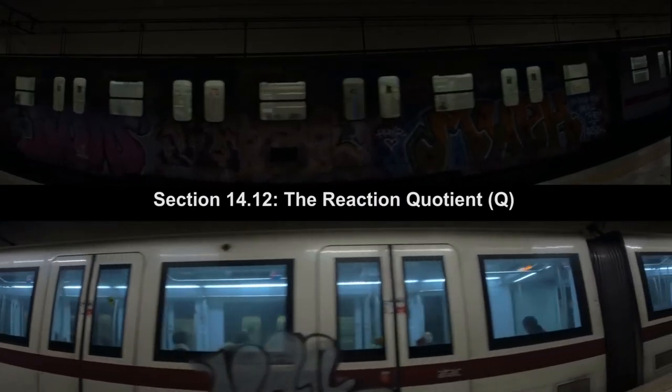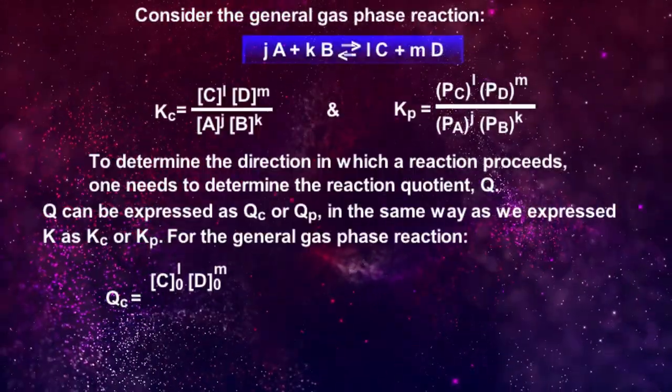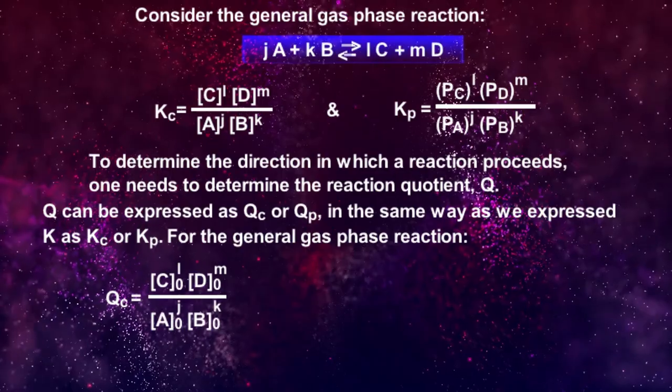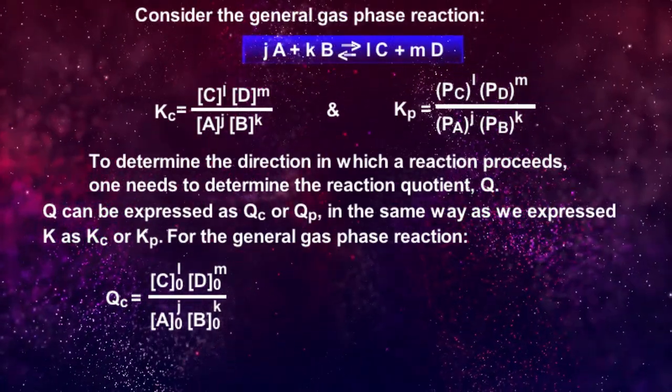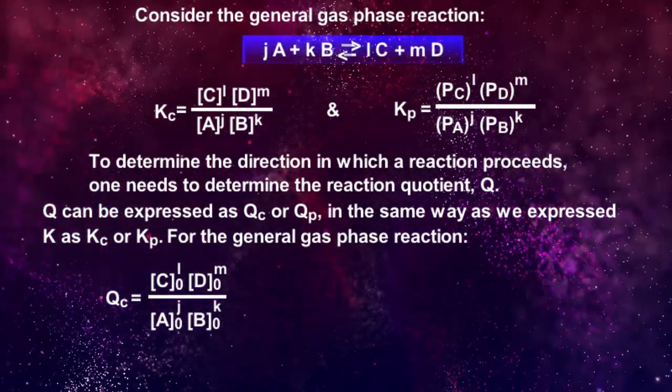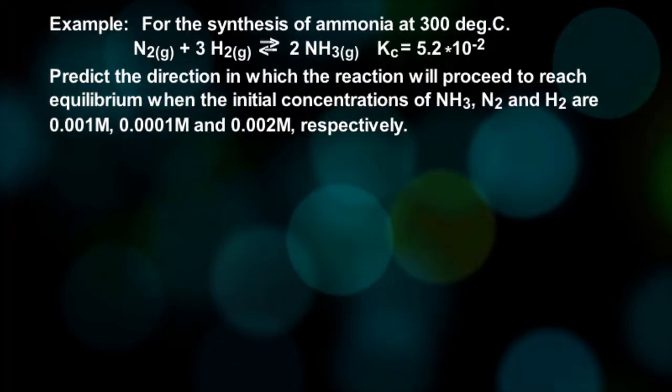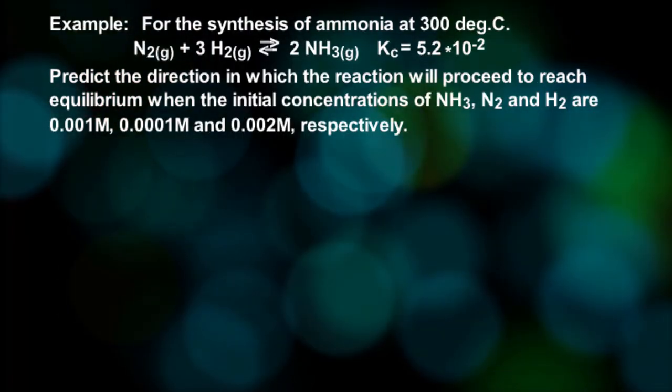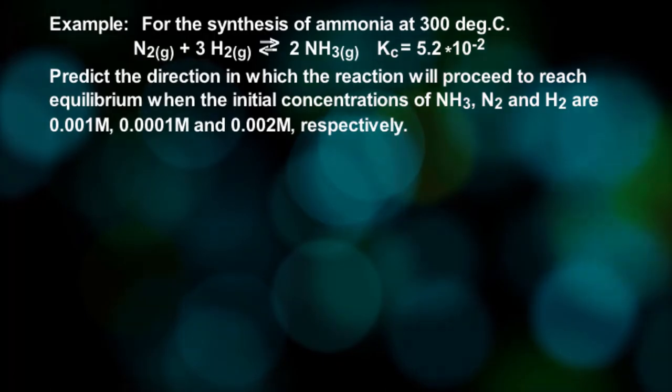In section 14.12, reaction quotient Q is introduced. One needs to compare the numerical value of Q to the equilibrium constant K to predict the shift in the direction of equilibrium. Hence, this topic involves both conceptual as well as mathematical understanding.